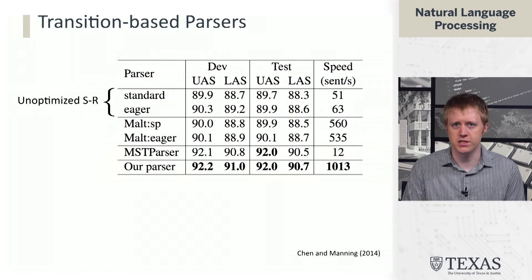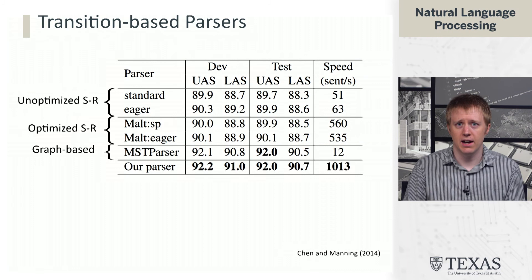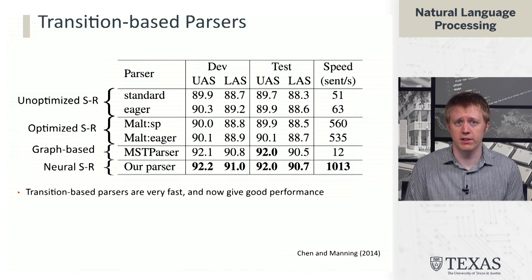To illustrate why people care about the transition-based framework: from the original Danqi Chen work, you can see that performance doesn't beat other systems like MST parser in accuracy, but it's extremely fast. Graph-based parsers like MST parser can do about 10 sentences per second, whereas the neural shift-reduce parser of Danqi Chen could do 1,000. So if you want to run a dependency parser on a lot of data, this is typically the framework you'll use, unless you really care about that last bit of performance.